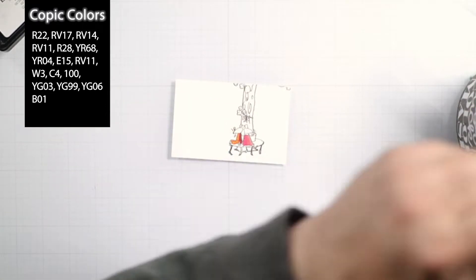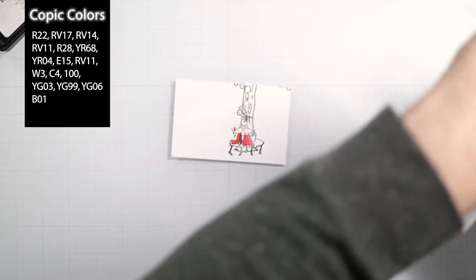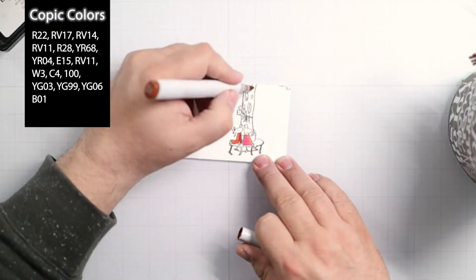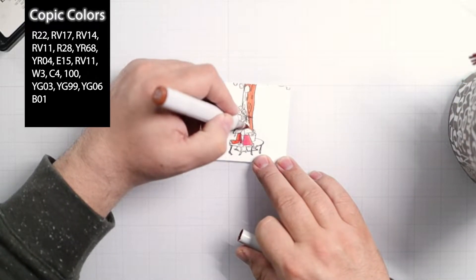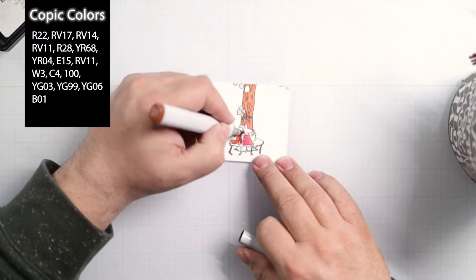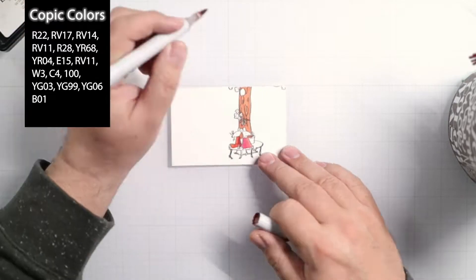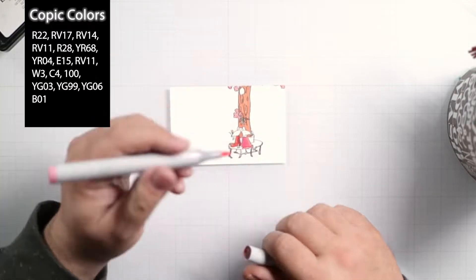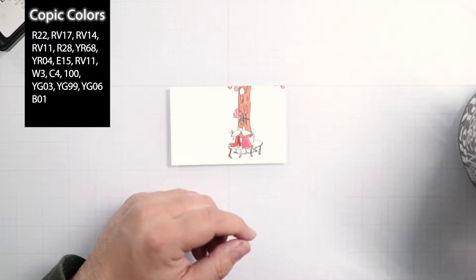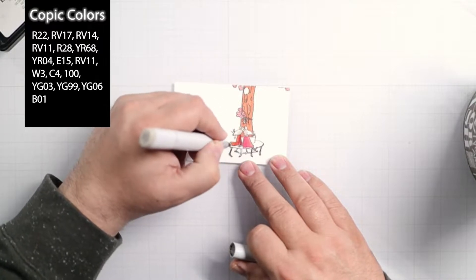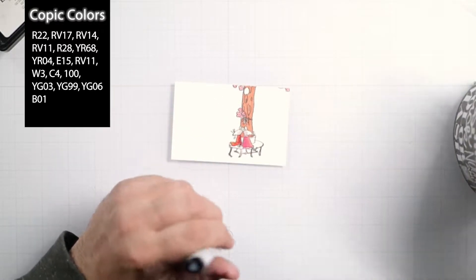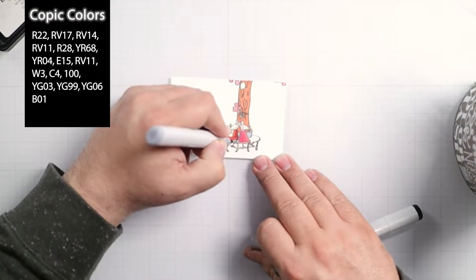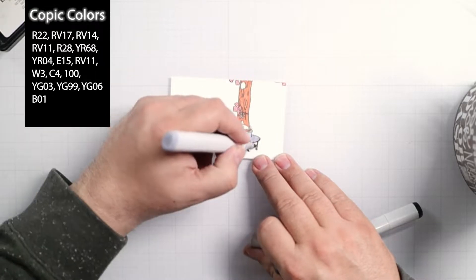Once I've stamped this out in some Copic friendly ink, I used Picket Fence hybrid intense black ink, I'm going to color it out in Copic markers. I'm going to use the same palette throughout today's video and here they are: R22, RV17, RV14, RV11, R28, YR68.